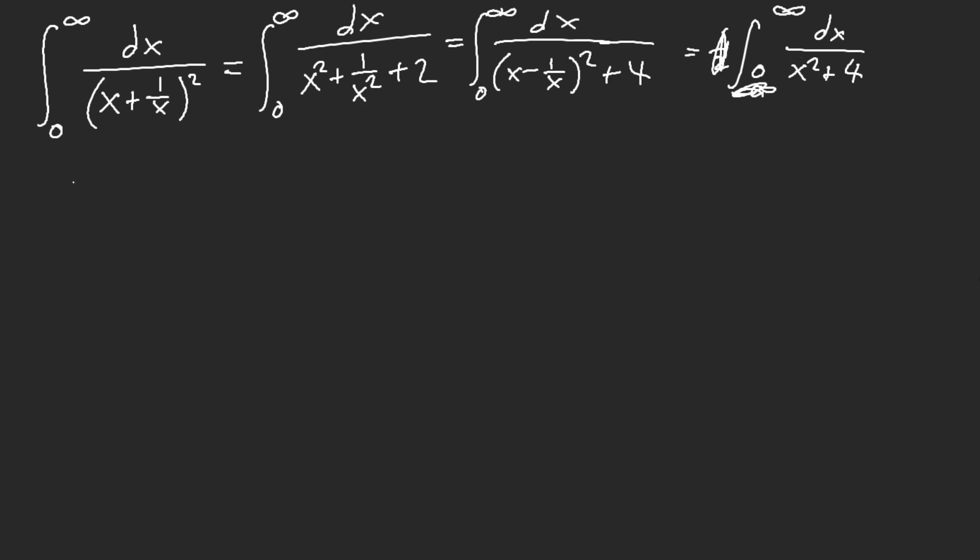So now here, it's just easy. This is just 1 half of the inverse tangent of blah, blah, blah, from zero to infinity. We know this is π over 2, and our answer is π over 4. Okay? So that's the advanced way of solving it.